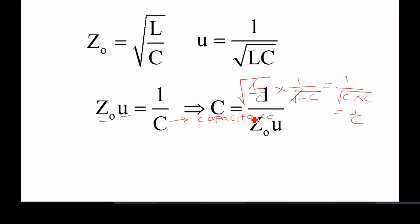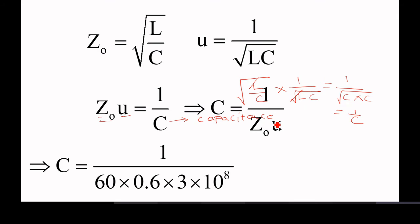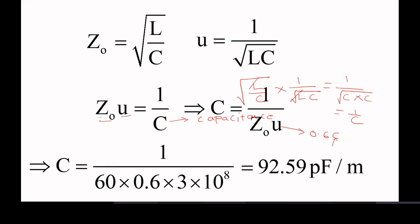C is nothing but 1 by Z₀U. Z₀ is given as 60 ohms and U is 0.6 times c, where c is 3 into 10 to the power of 8 — the velocity of light in free space. If we substitute and simplify, we get 92.59 picofarad per meter.